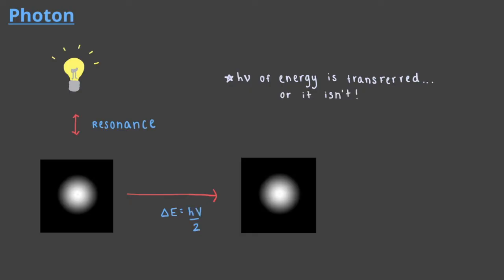There is no h nu over 2, or any other amount transferred by light with frequency nu. This energy quantity that is exchanged, h nu, is called the photon energy. The energy of a photon of light with a given frequency is E photon equals h times nu.